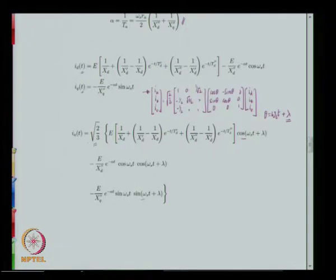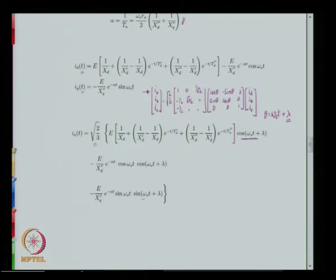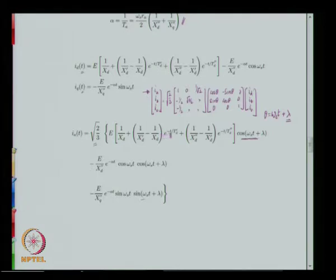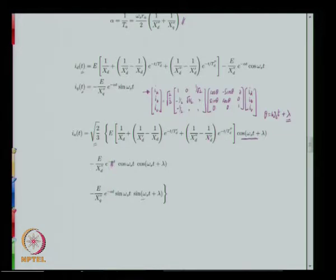Adding up id and iq contributions we get an expression for ia. We see that ia consists of a cosinusoidally varying component whose amplitude is determined by: a constant term e/xd, plus a term that decays exponentially with time constant T'd, another term that decays exponentially with time constant T''d (much faster), and two more terms that decay exponentially with time constant ta — the armature time constant.